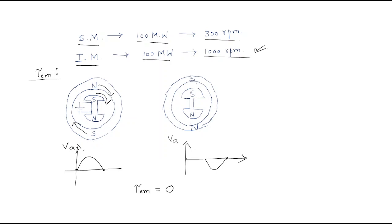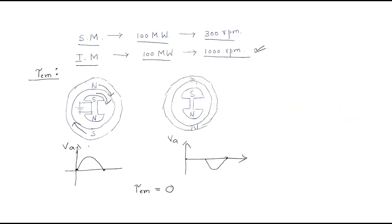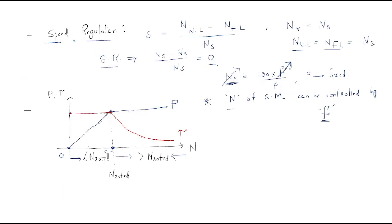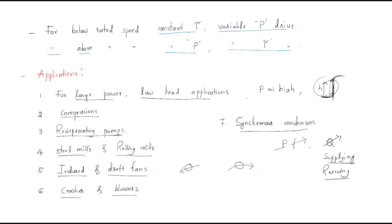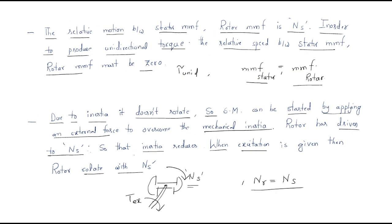It is not possible to produce unidirectional torque without assistance, so an external force is required — that is a disadvantage. We also have to eliminate the inertia effect. For this, some auxiliary means is required for the synchronous motor; otherwise it will not rotate. These are the applications, advantages, disadvantages, and torque production of the synchronous motor. I hope all of you understood the session. Thank you.